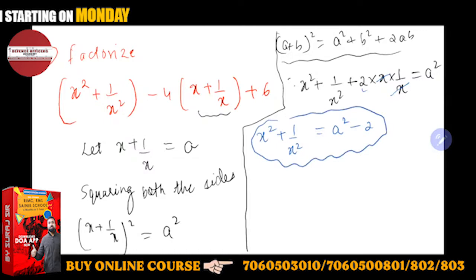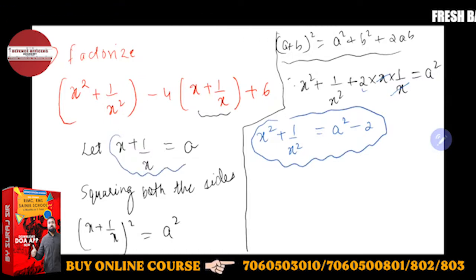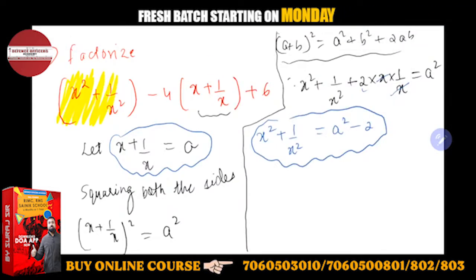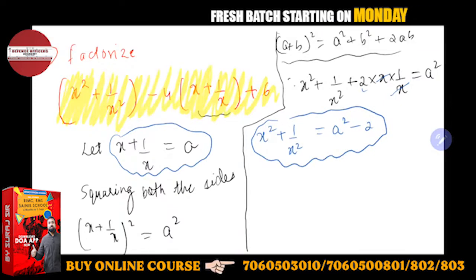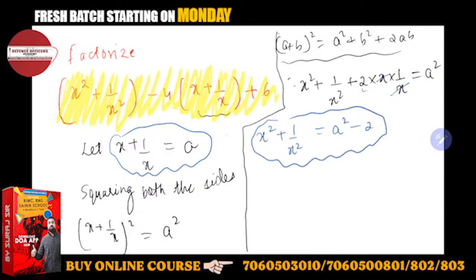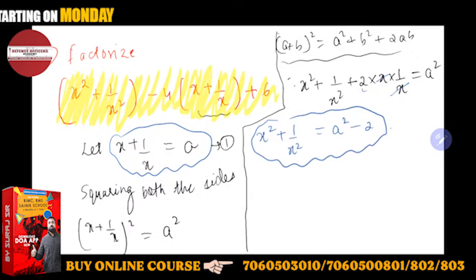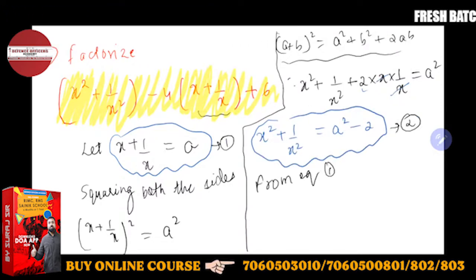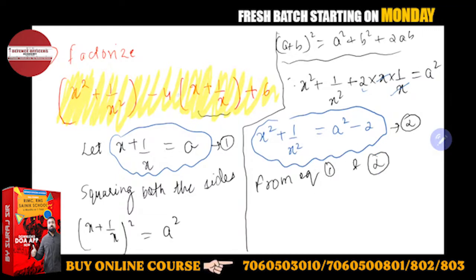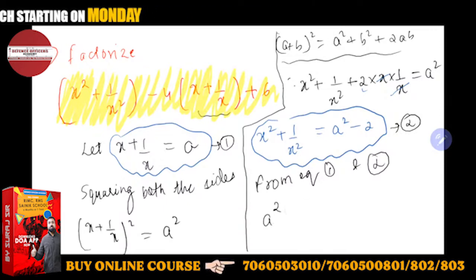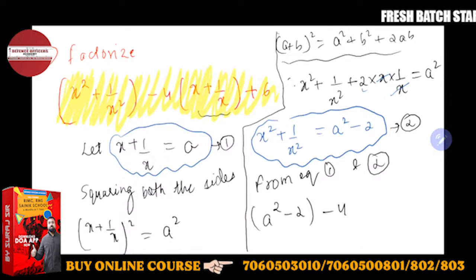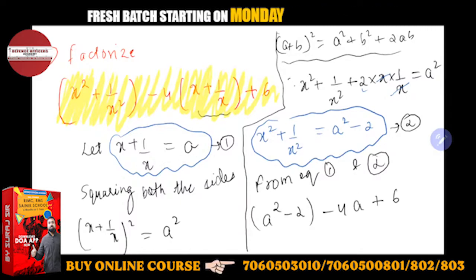Toh mere paas x square plus 1 upon x square ki value aa gayi in terms of a, aur x plus 1 upon x toh humne liya hi hai. Phir jo humari given equation hai, jisko main highlight kar raha hoon, us given equation ko hum likhte hain in terms of a. Toh x square plus 1 upon x square ki value hai a square minus 2, minus 4 into bracket mein x plus 1 upon x — jiska value a hai — plus 6. Is tarike se yeh modify ho gayi hai.